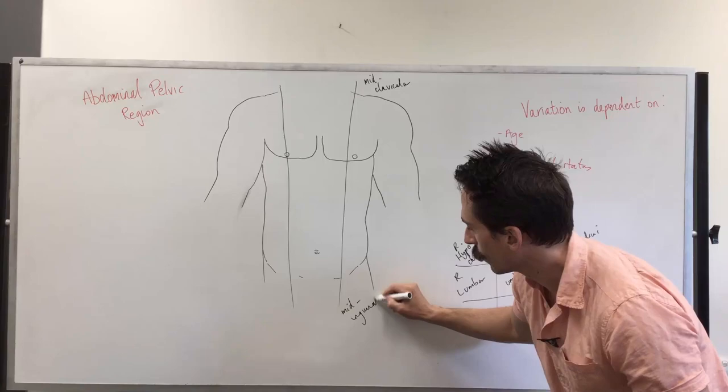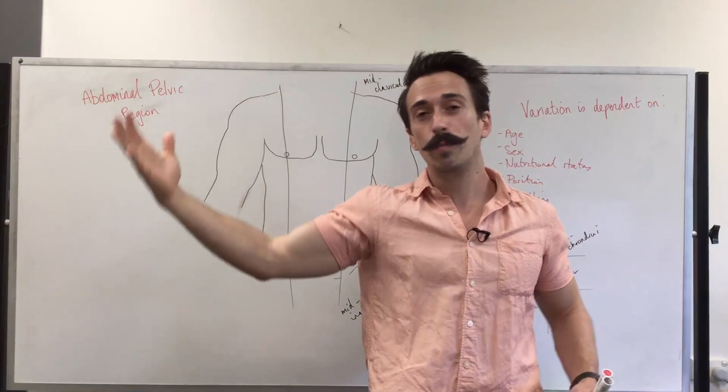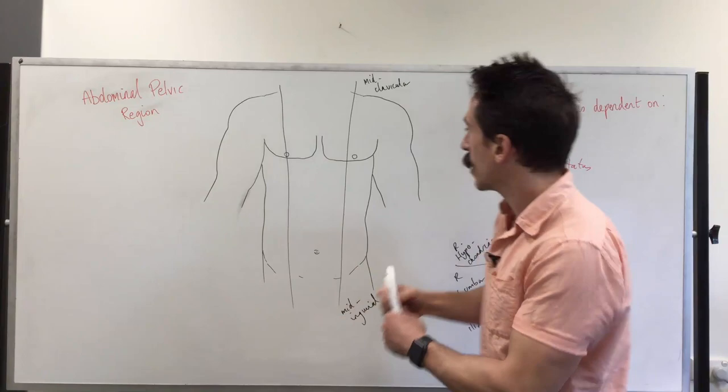That's on both sides. We've got our vertical lines. Now, our horizontal lines. The top or most superior horizontal line, this is going to be what we call the subcostal or transpyloric line.